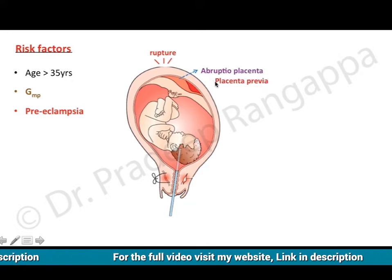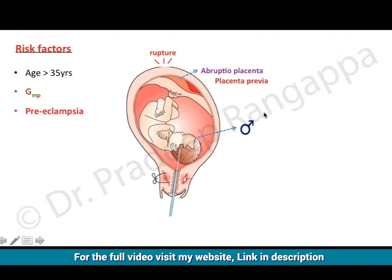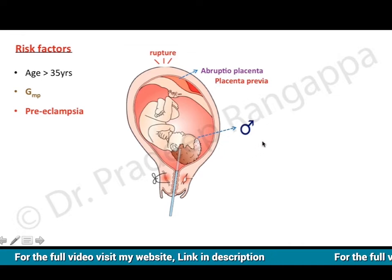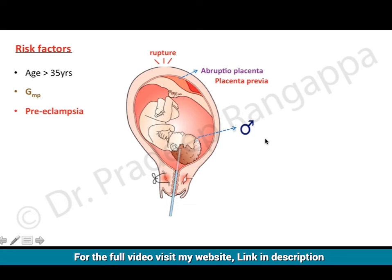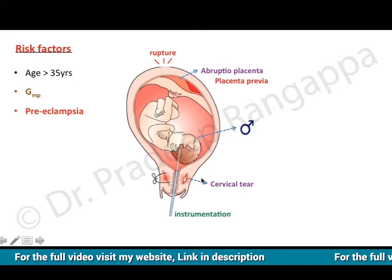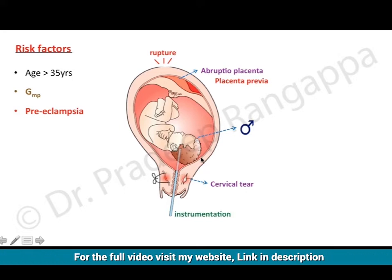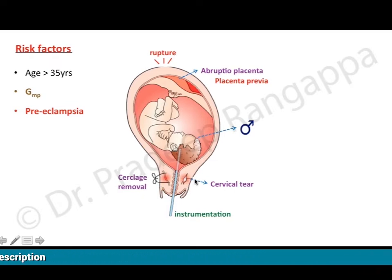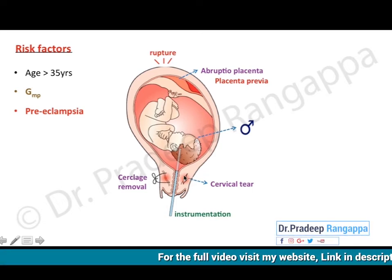Abruptio placentae can be a risk factor for amniotic fluid embolism. It has been found that the gender of the child — specifically a male child — can also have a bearing on AFE. Patients with any cervical tear are at risk, as is any instrumentation during delivery. Cervical cerclage removal can also be a risk factor.